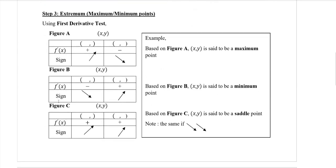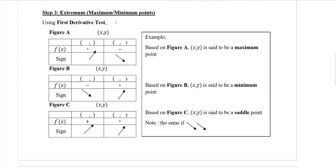The next step is to determine the extremum, which is either maximum, minimum, or saddle point. Based on the first derivative test, if the sign goes up and then down, the point is at the top — that means it is a maximum point. If the sign goes down and then upwards, the point is at the bottom — that means it is a minimum point.